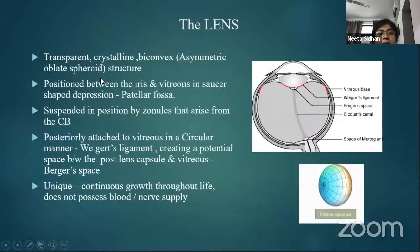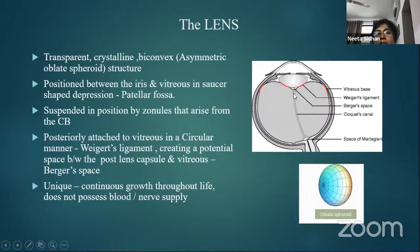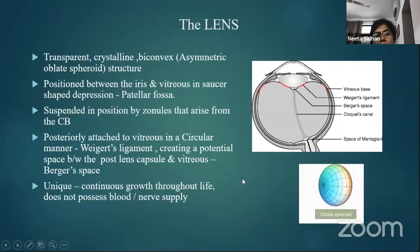The lens is a transparent crystalline biconvex structure. Its shape has also been referred to as an asymmetric oblate spheroid. It is positioned in the posterior chamber in a saucer-shaped depression termed the patellar fossa, and is suspended by the ciliary zonules. Posteriorly, it is attached to the vitreous by a circular ligament known as the Wieger's ligament, which creates a space known as Burger's space. The unique thing about the lens is that it continues to grow throughout life and does not possess any blood or nerve supply.